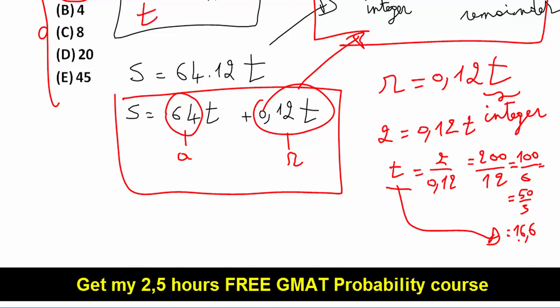when I calculate T, I get 16.6, so it's not an integer. So the remainder is definitely not 2.